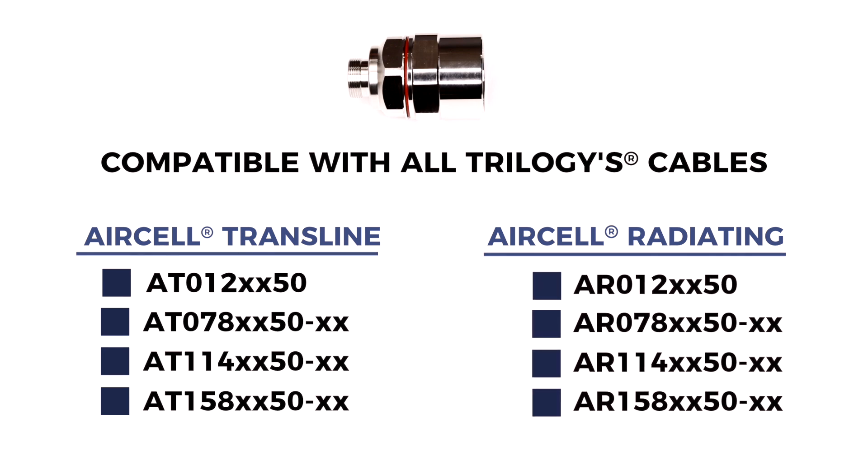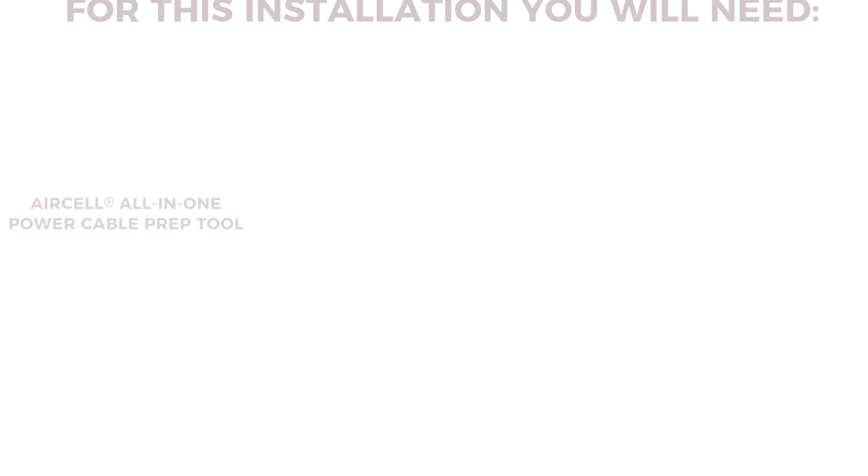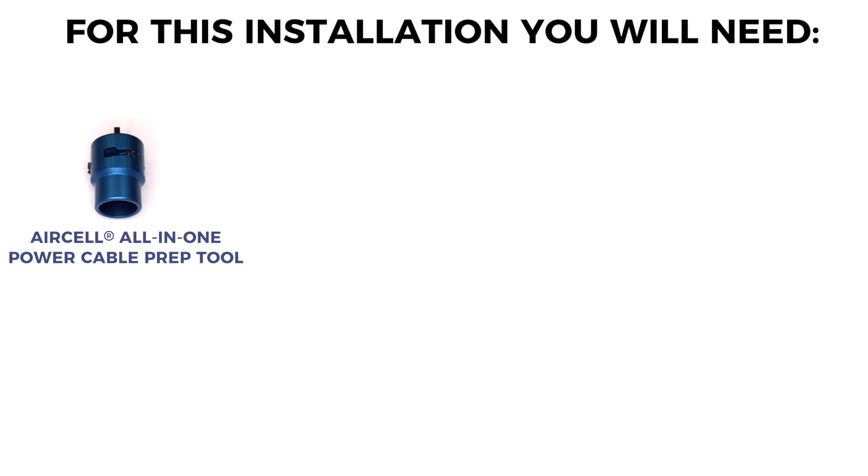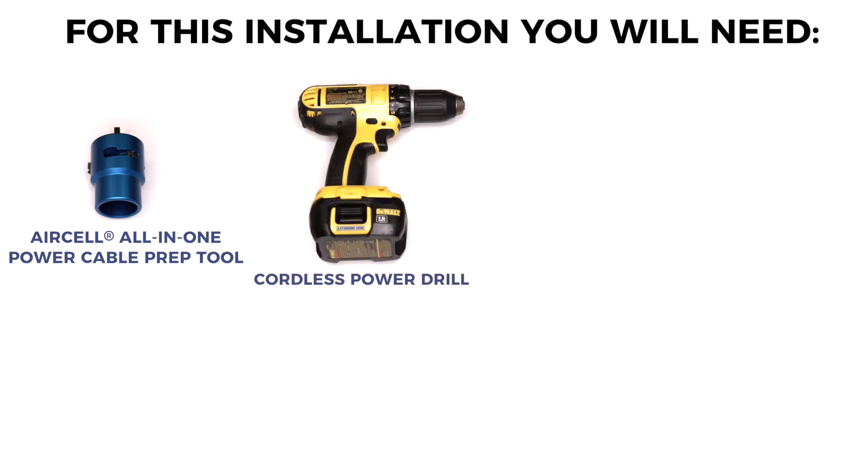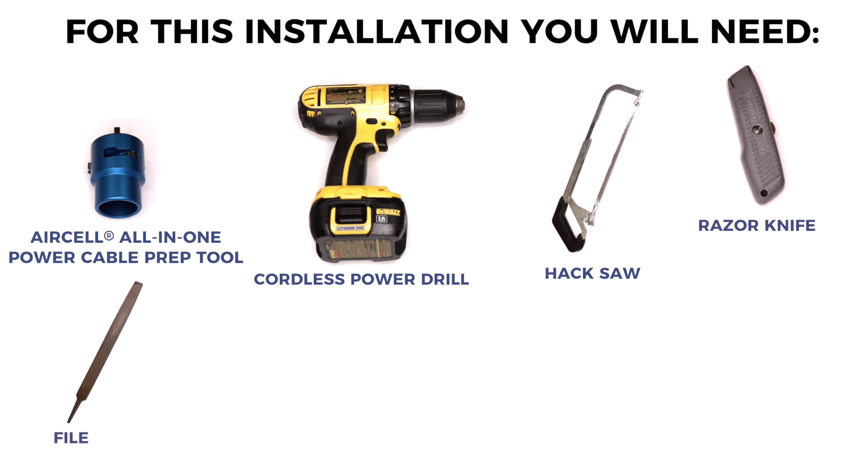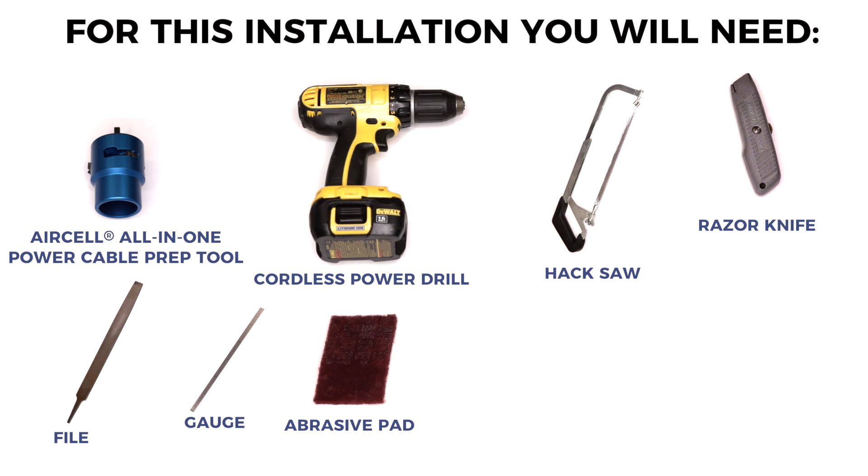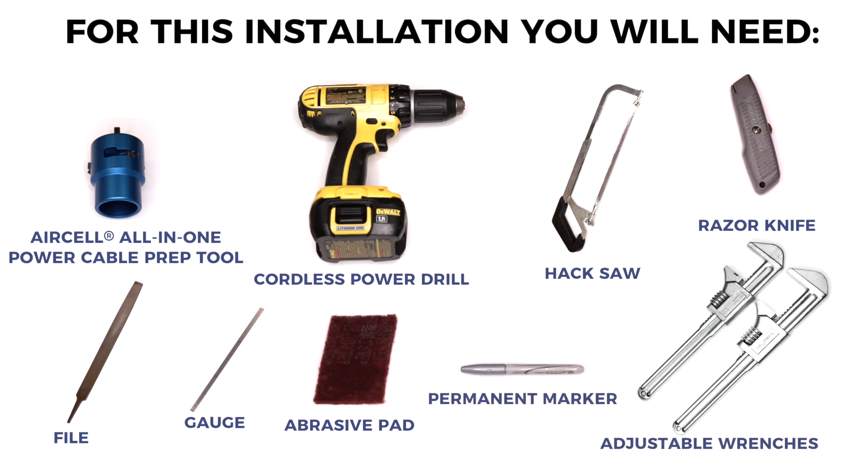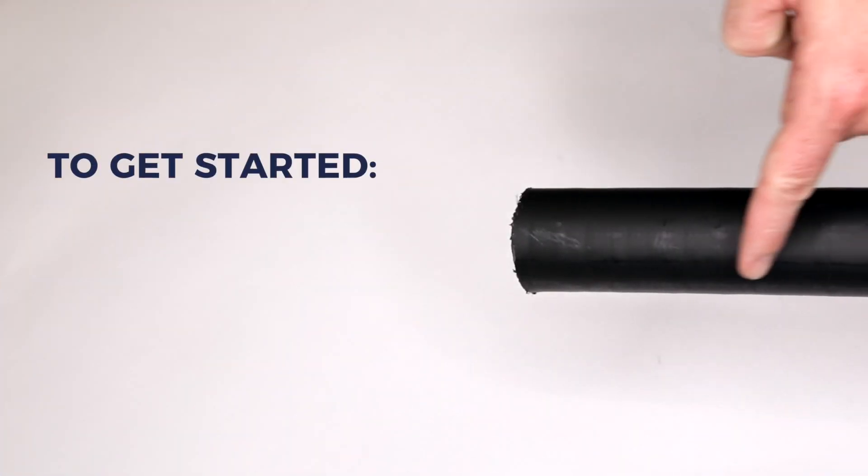For this installation you will need the AirCell all-in-one power cable prep tool, a cordless power drill, hacksaw, razor knife, file, small ruler or wire, abrasive pad, permanent marker, and adjustable wrenches. To get started, be sure to hold the cable at a downward angle throughout the entire process to avoid any shards or debris from entering the cable length.